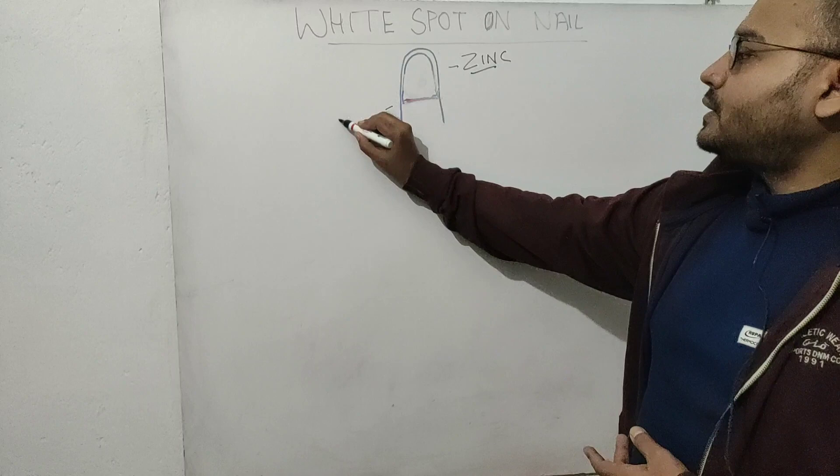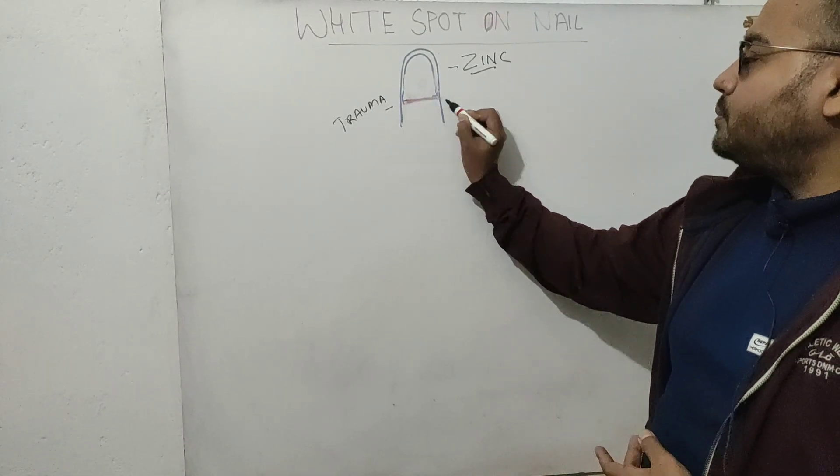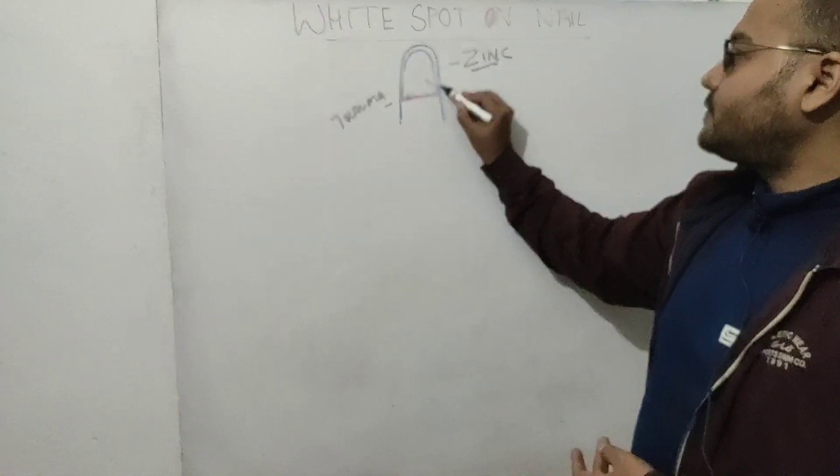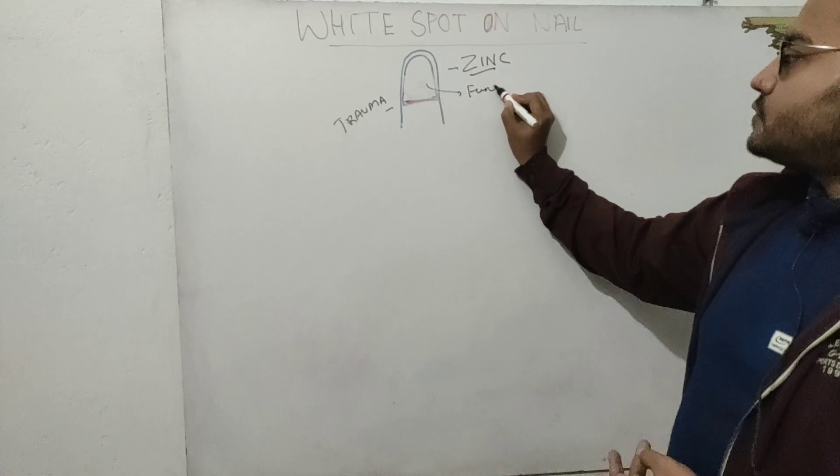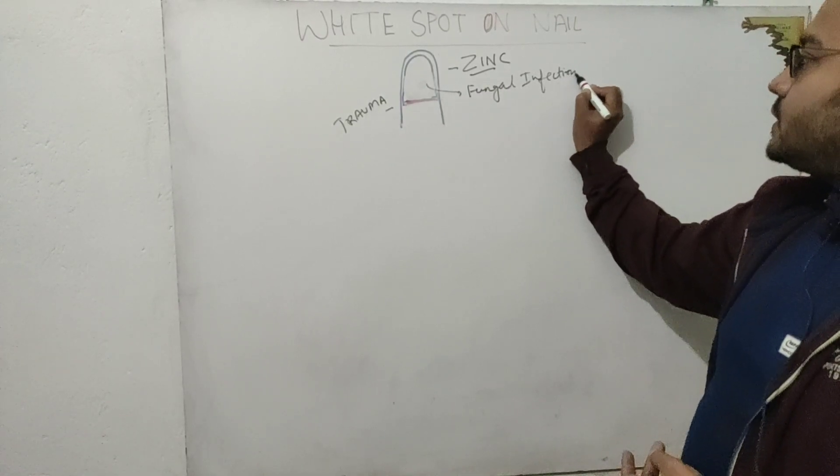So first is trauma—trauma to the nail bed. This is your nail bed. Second is nutritional deficiency. The third important cause is fungal infection. Fungal infection can also sometimes cause white spots on your nails.